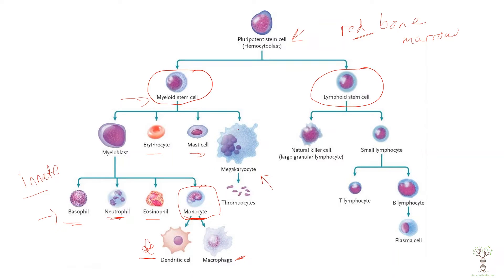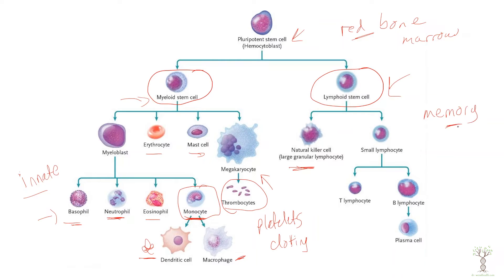Megakaryocytes are part of our bone marrow that differentiate into thrombocytes, also called platelets, which are involved in blood clotting. The lymphoid stem cell pathway differentiates into our lymphocytes — the cells that can develop immunological memory. We have natural killer cells and small lymphocytes that develop into our T cells and B cells.